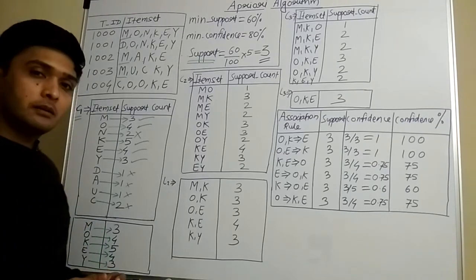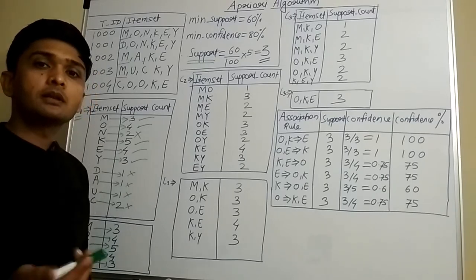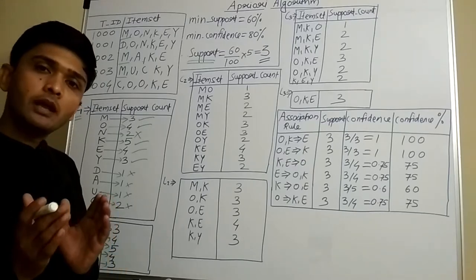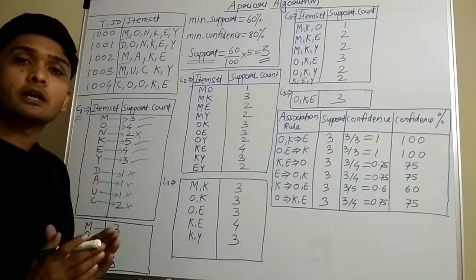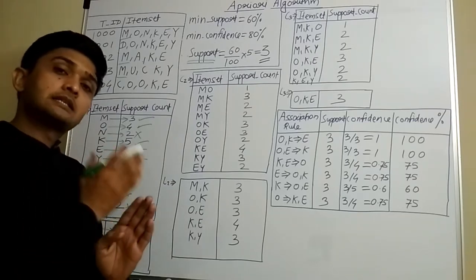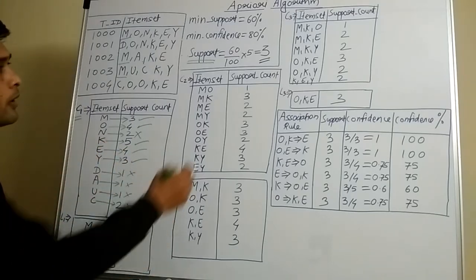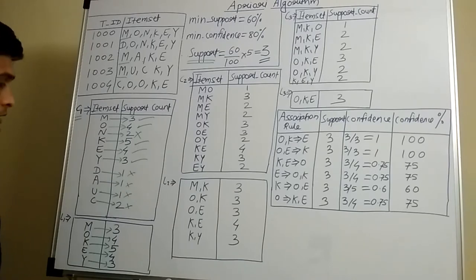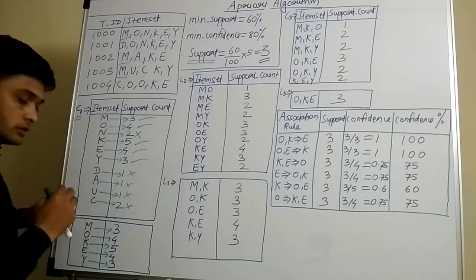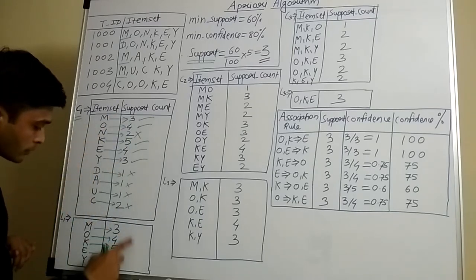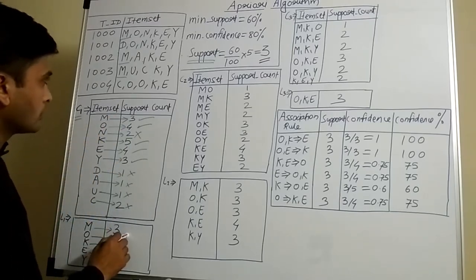It's like campus placements — if an industry asks for a 60% criteria, they eliminate candidates having a percentage less than 60. Exactly the same way, we eliminate items whose support count is less than 3. We are only going to consider the items having values of 3 or more. This is how we got L1.